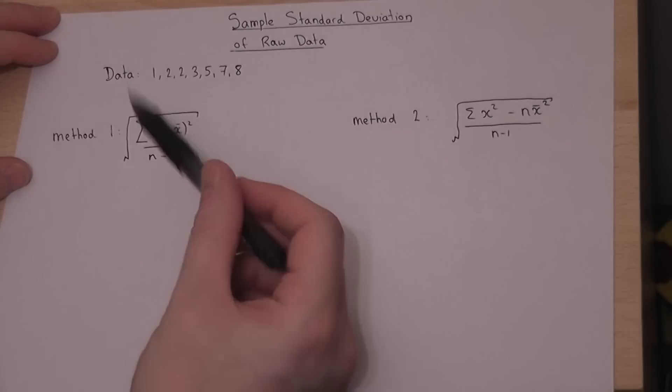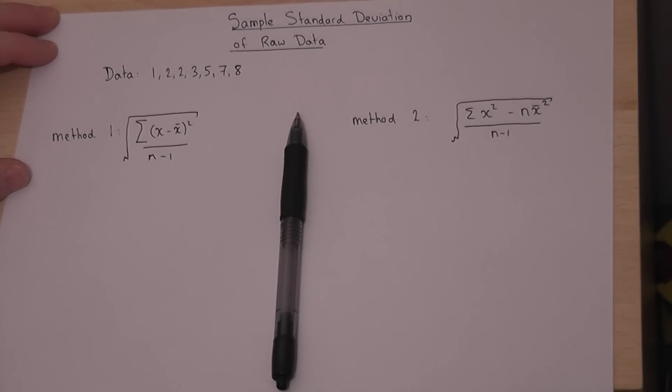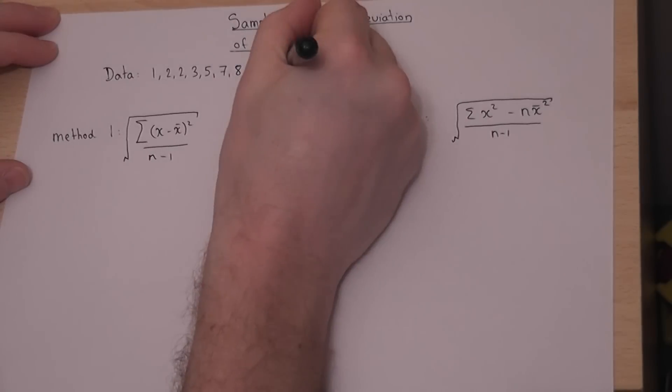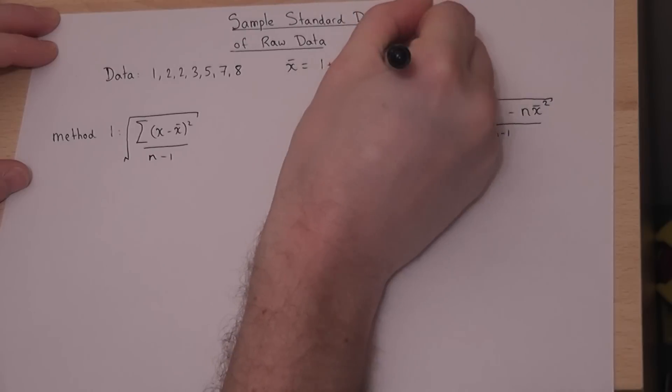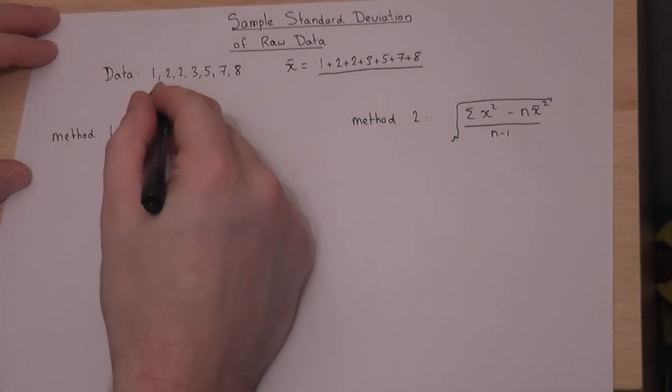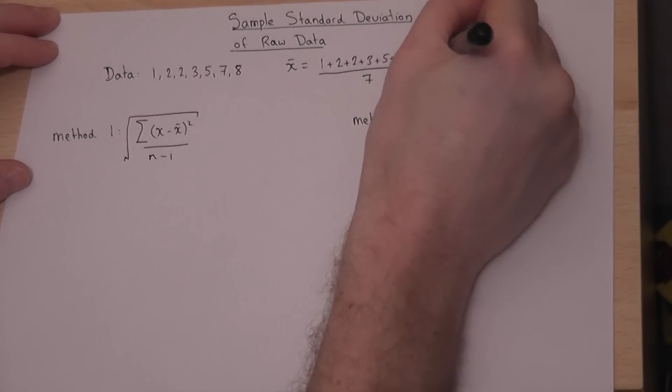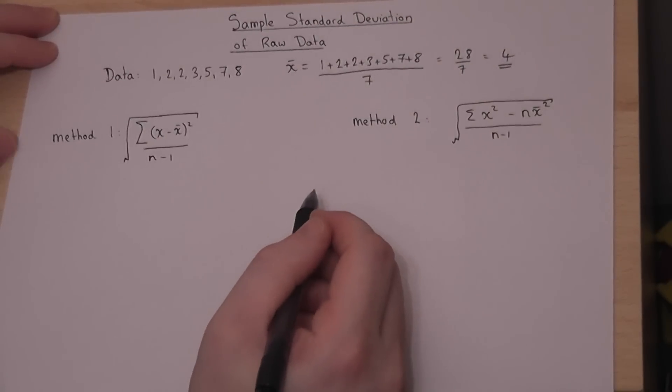Both methods require the mean, so we'll work that out first. To find the mean, we have to add together the values and divide by n, the number of values, which is 7. So 28 over 7 equals 4. That's always the starting point, find the mean.